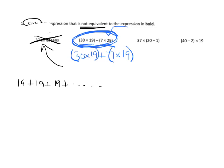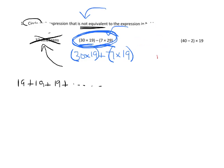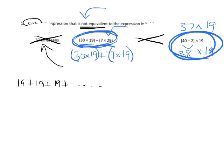We're going to circle that second one because it is not equivalent. Going on to the third one: 37 times 19 is definitely equal to 37 times (20 minus 1) because 20 minus 1 is 19. So this one is equivalent and we're not going to circle it. And the last one is 38 times 19, which is also not equivalent. So the two we circle are the second one and the fourth one.